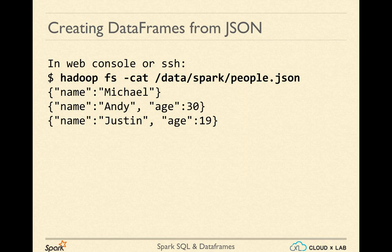You can see that this file contains three JSON objects. Each line is a valid JSON object, and each of these lines are separated by new lines. Please note that the complete file is not a valid JSON object, while each individual line is.